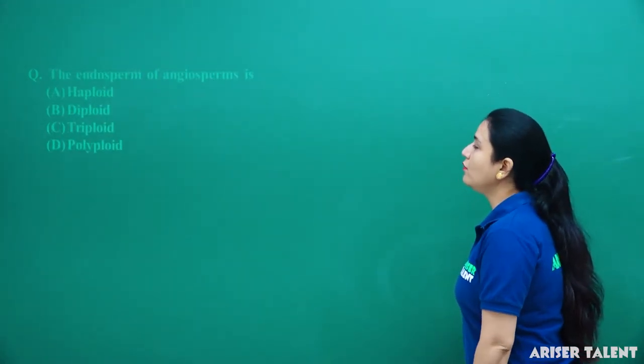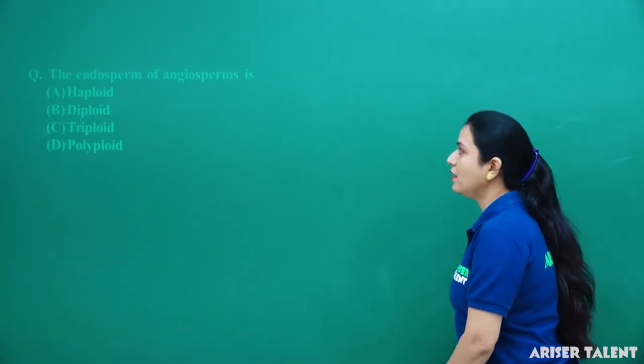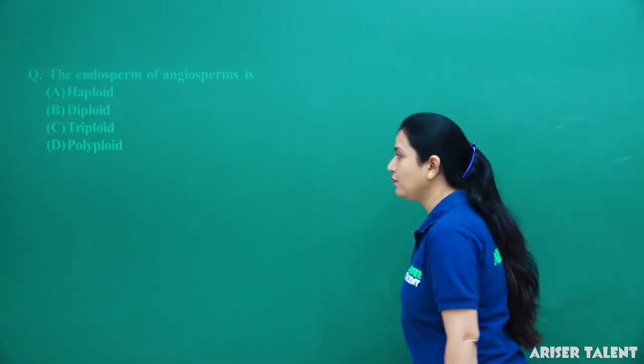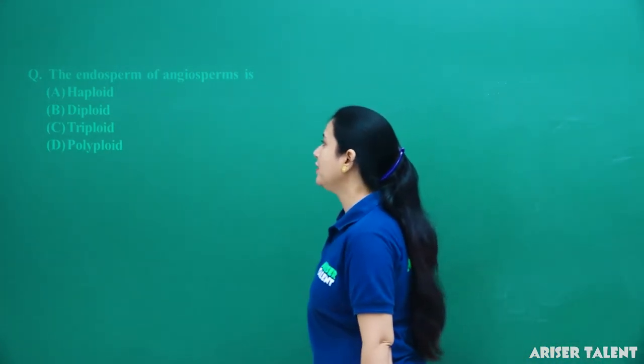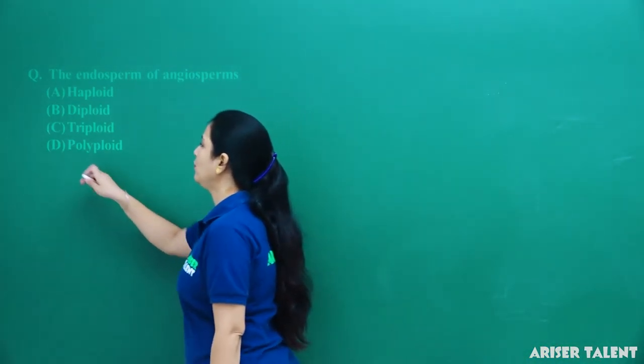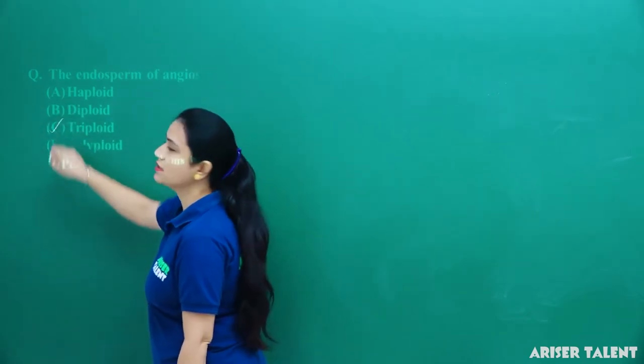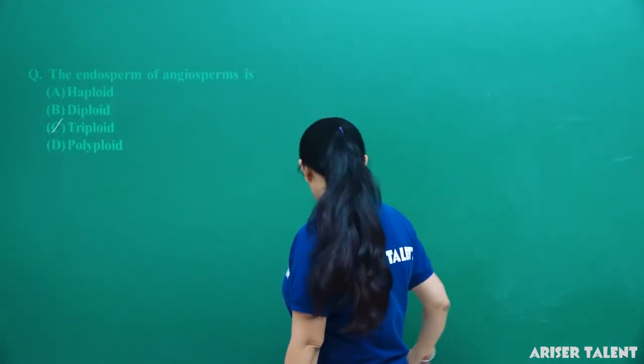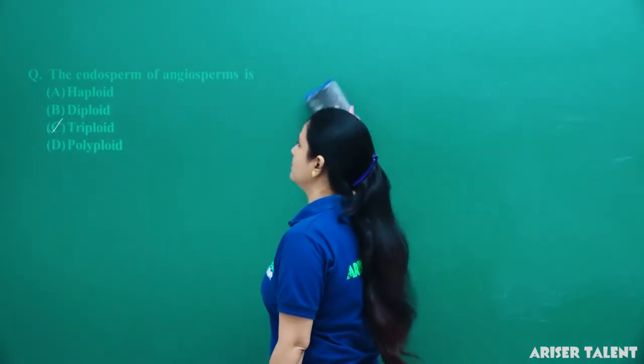The endosperm of angiosperm is haploid, diploid, triploid, or polyploid? It is triploid. Option C is the correct answer.